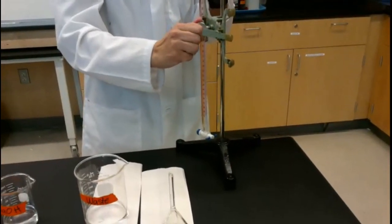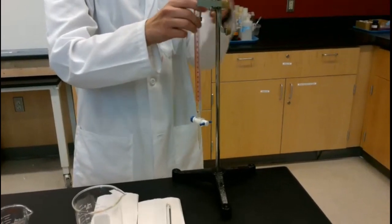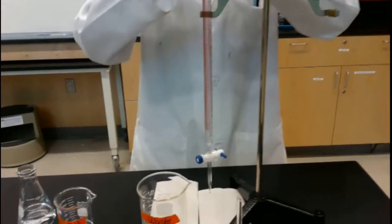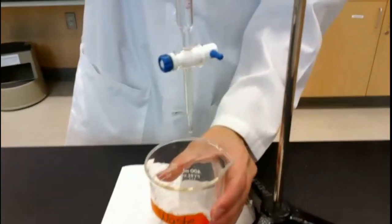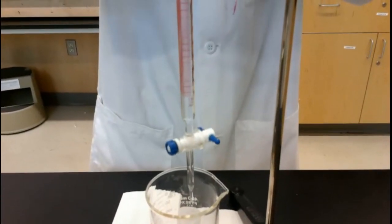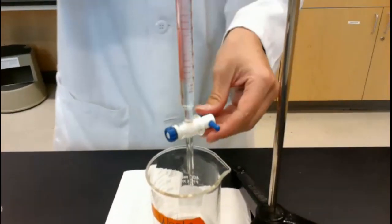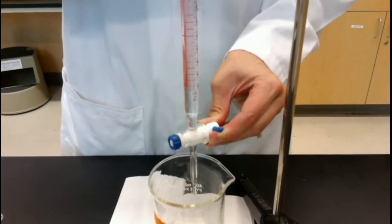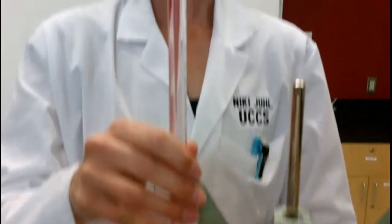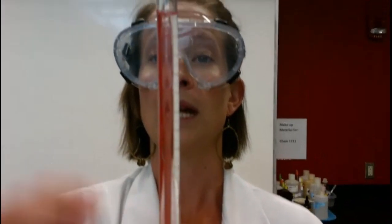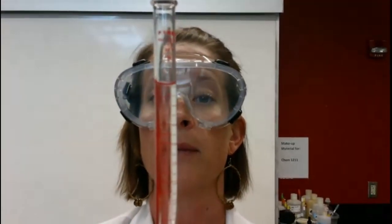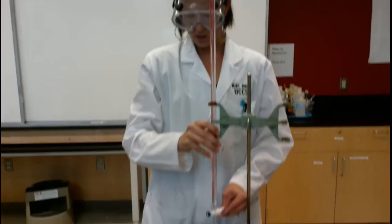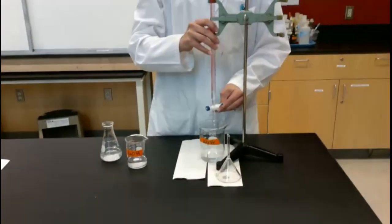Now I am going to raise this back up, move my ring stand and put the waste beaker underneath my burette. Now I am going to open the stopcock by making it parallel and just slowly I am going to release it until the meniscus reads at the zero line. With enough technique you can learn how to do the titration drop by drop to get as precise as possible.